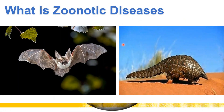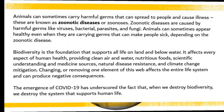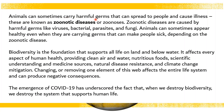This year, COVID-19 has affected all of us and it is known as a zoonotic disease. Let's look at what zoonotic diseases are. Animals can sometimes carry harmful germs that can spread to people and cause illness — these are known as zoonotic diseases or zoonoses. Zoonotic diseases are caused by harmful germs like viruses, bacteria, parasites, and fungi. Animals can sometimes appear healthy even when they're carrying germs that can make people sick, depending on the zoonotic disease.